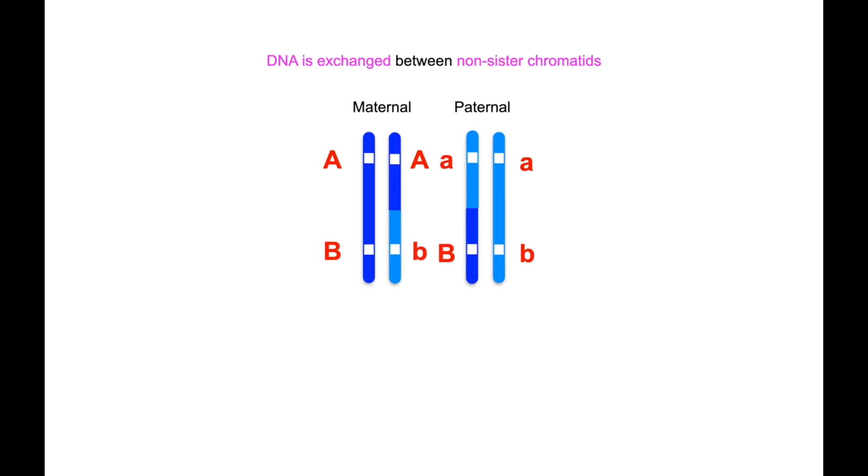As a result of that, DNA is exchanged between these non-sister chromatids. And you can see that as represented by the maternal now having a lowercase b on the bottom right-hand side, and the paternal now having an uppercase B on the lower left-hand side.